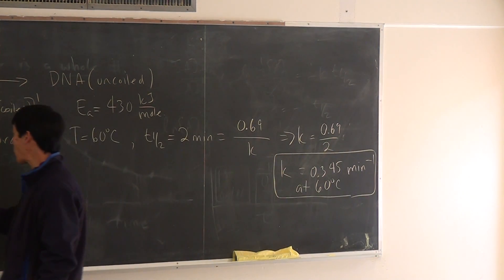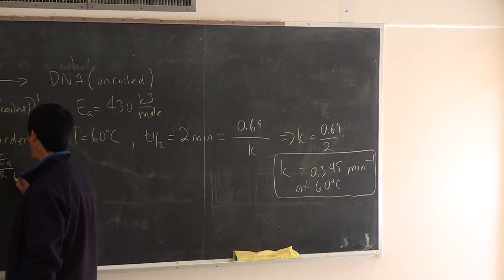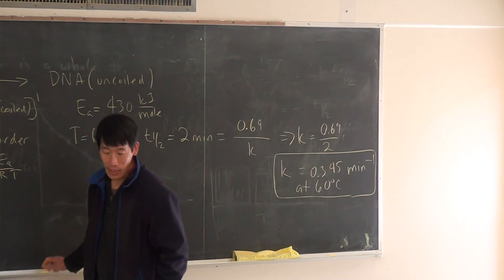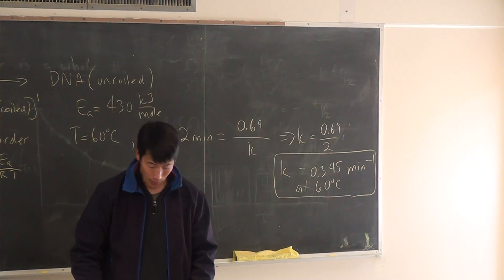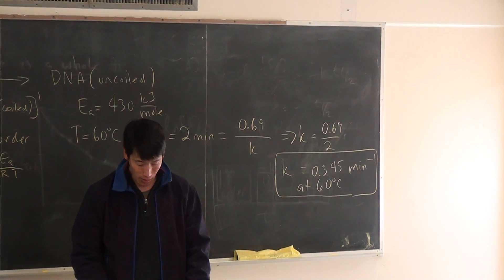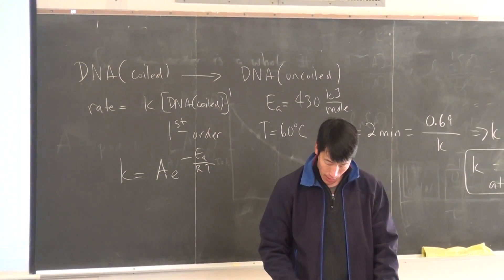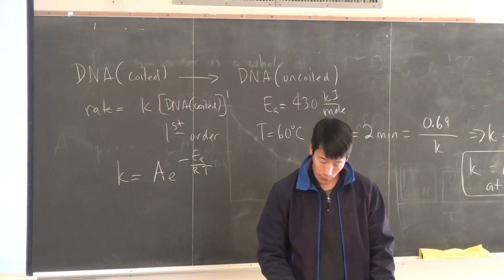So, what equation will we use to figure out how the rate constant K changes with temperature? Yeah, so we can use this equation. K is equal to A times E to the minus EA over RT. Now, the textbook shows an equation which relates two different temperatures and two different rate constants.